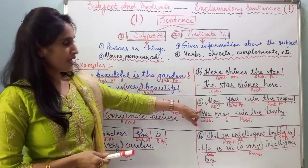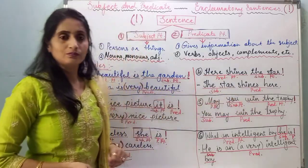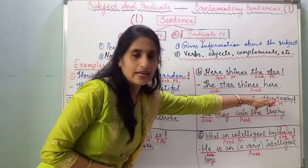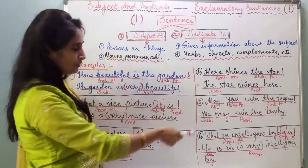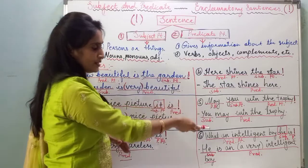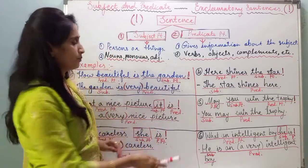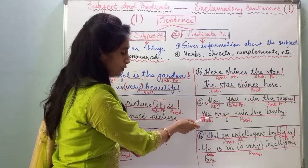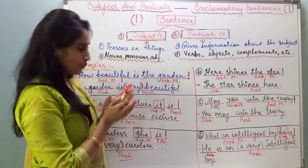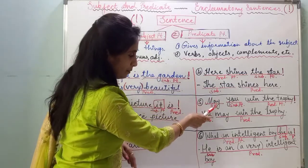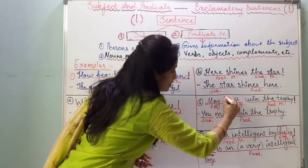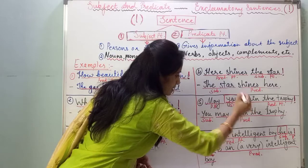The next sentence is 'May you win the trophy!' The conversion is 'You may win the trophy.' The subject in this sentence is 'you.' 'May win the trophy' is the predicate part. So 'you' is the subject part, 'may' is part of the predicate, and 'win the trophy' is also the predicate part.